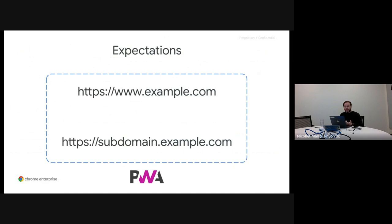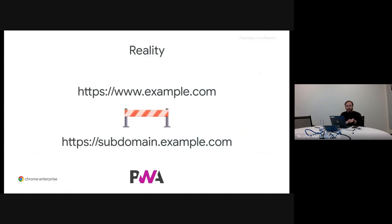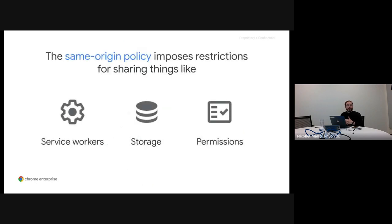When building a PWA, many developers with this type of site structure ignore the problems and feel that as long as the pages are part of the same site, they belong to the same experience and will provide a single PWA experience to users. But in reality, they find that the level of isolation between origins is much more strict than expected. The main reason is the same-origin policy, which imposes restrictions for sharing things like service workers, storage, and permissions — three very important components when building a PWA.